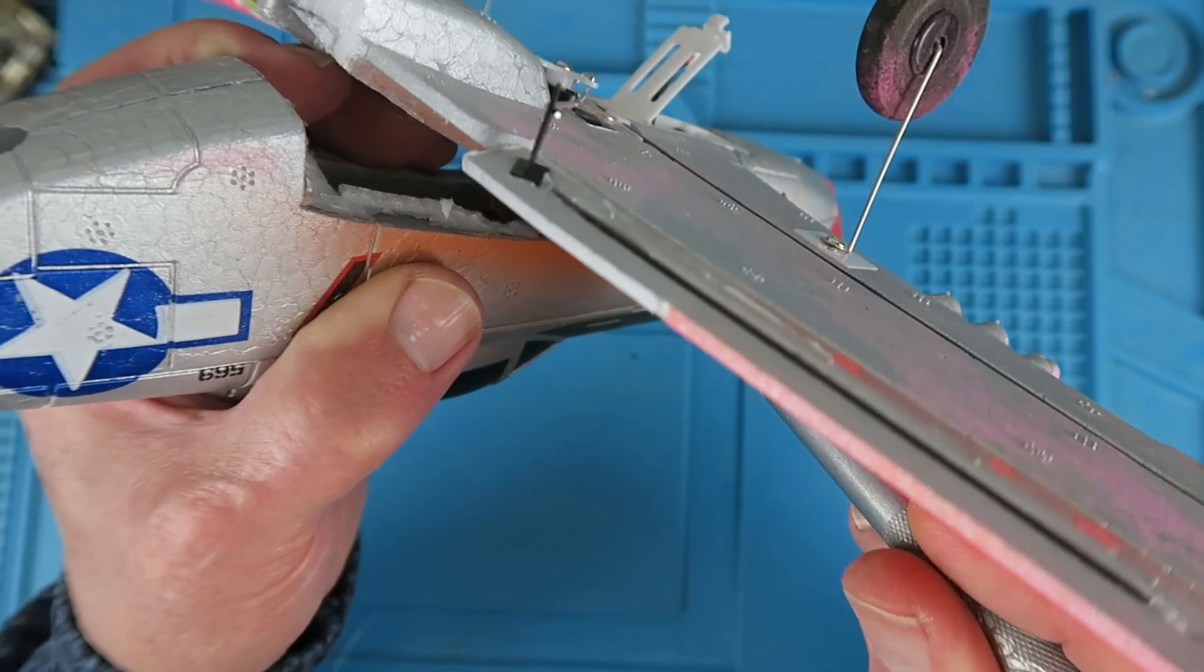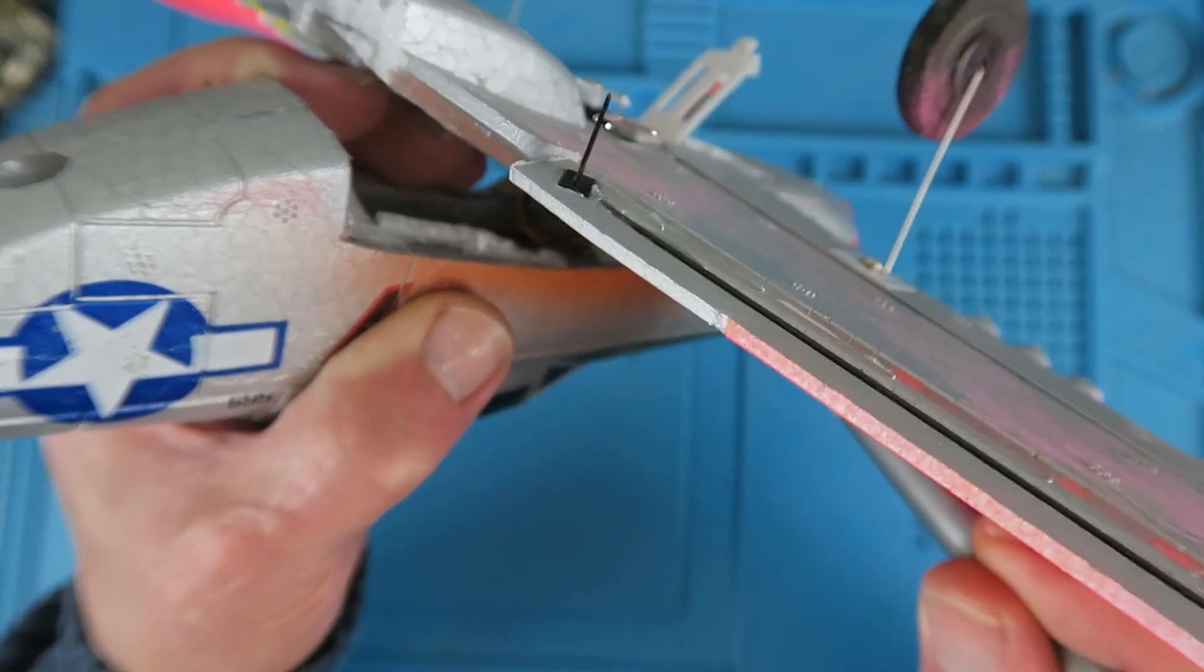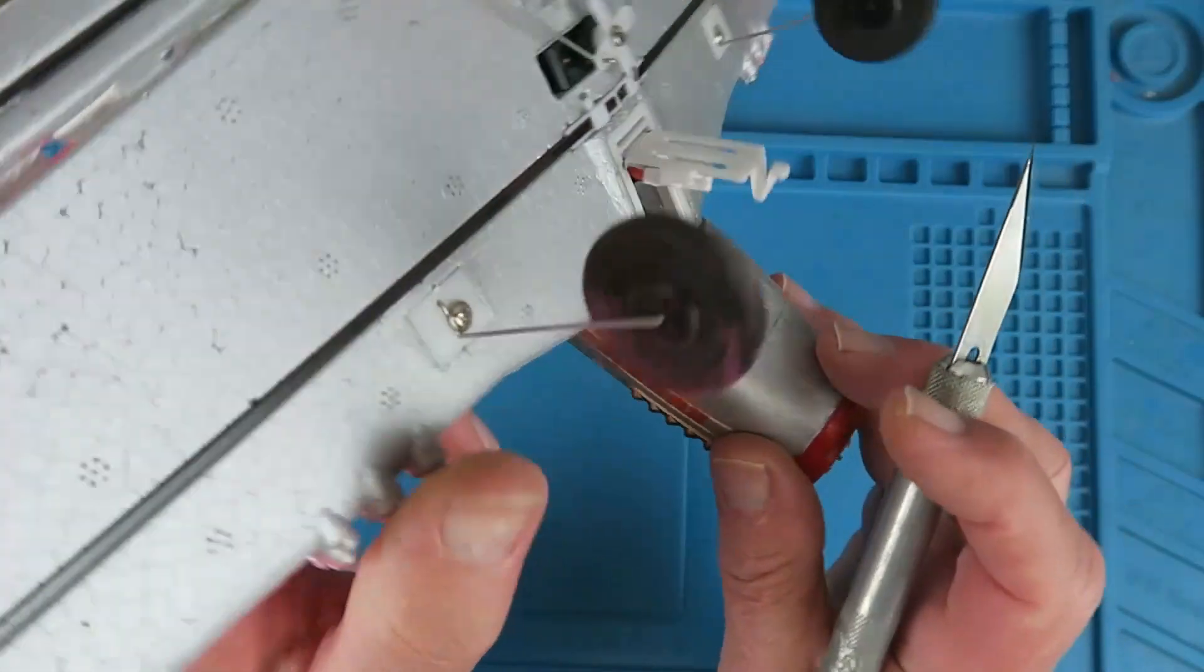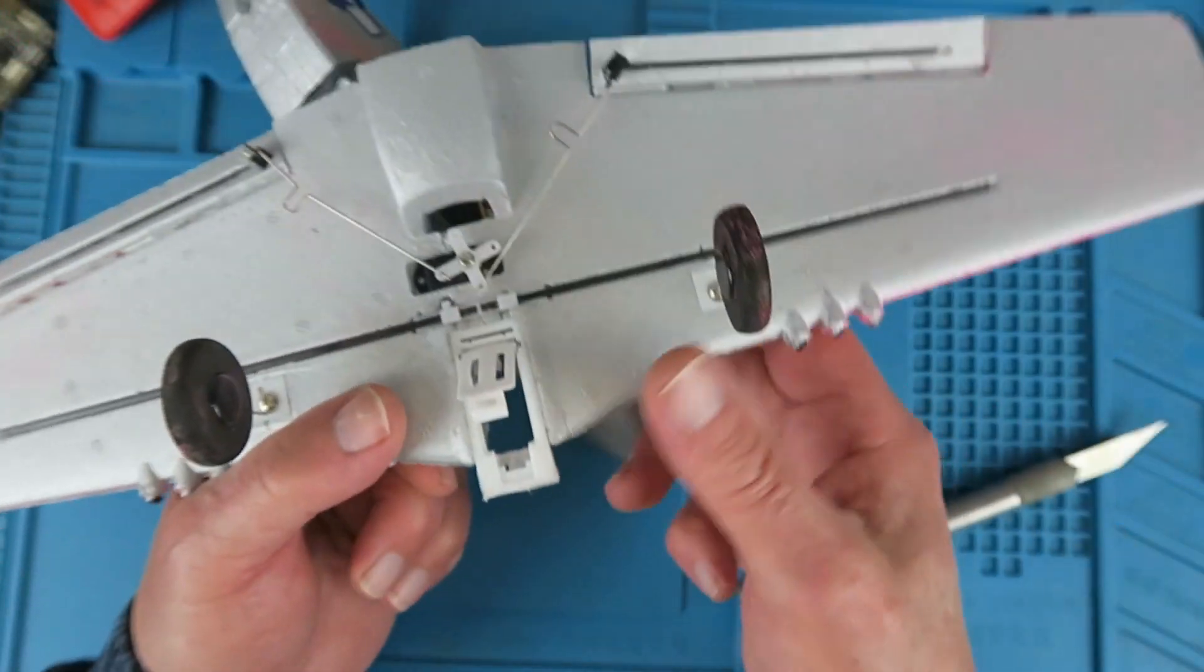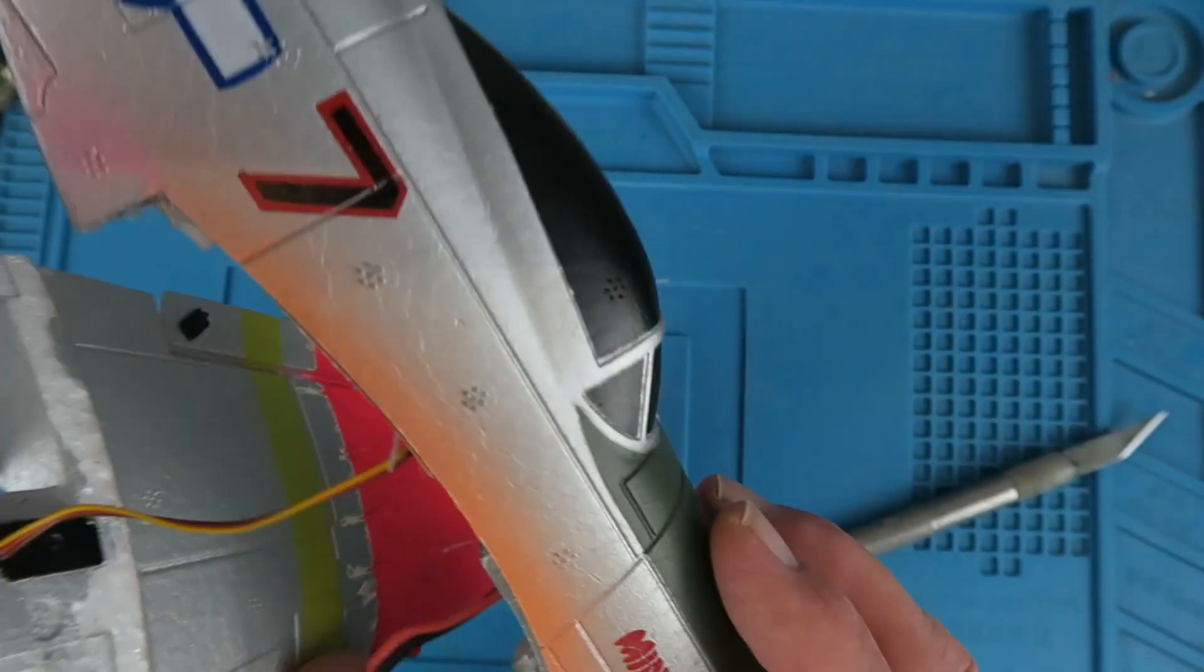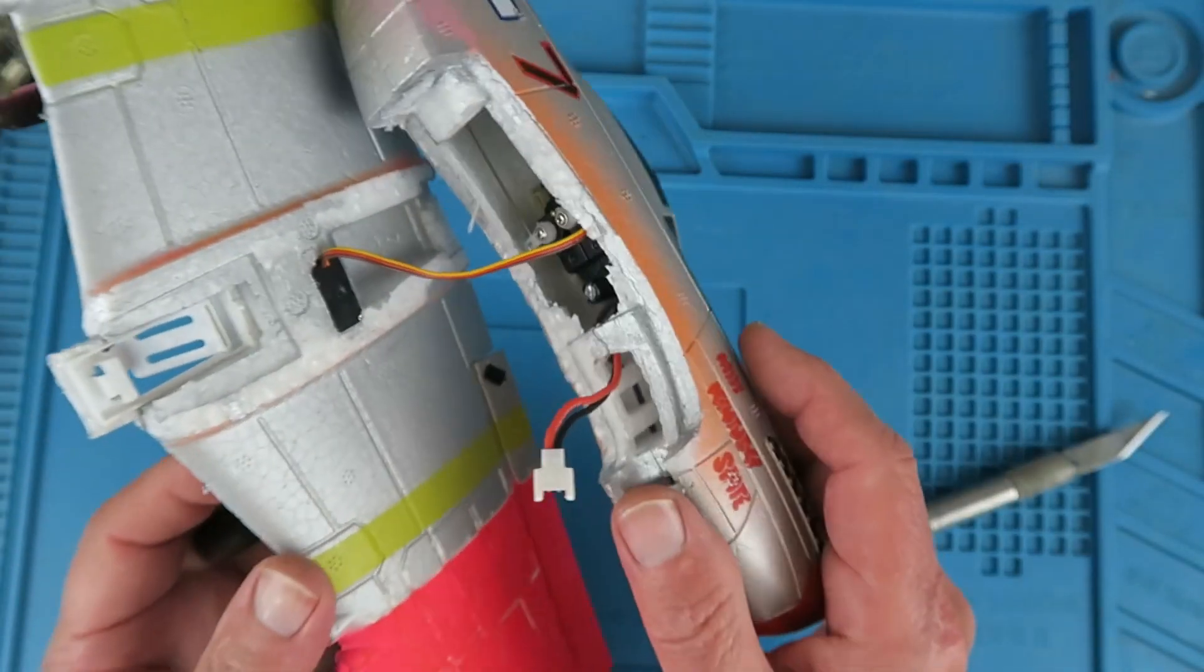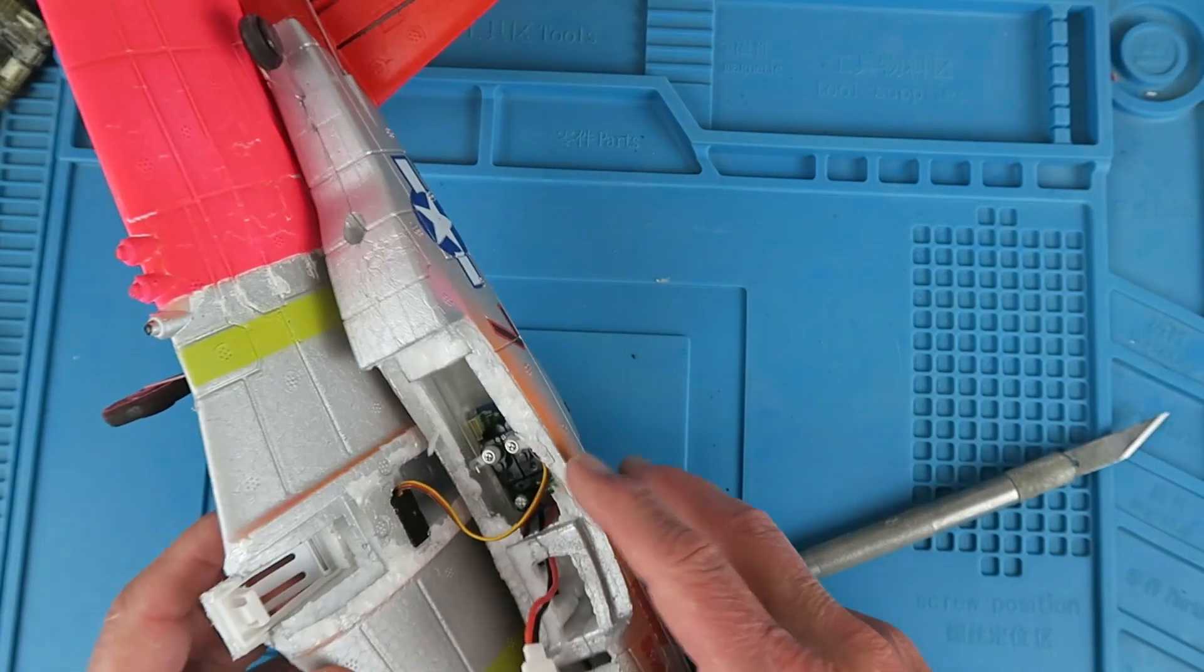This is probably one of those jobs that's easier to do the second time. There we can see the wing has separated just the servo connection going down onto the board there.